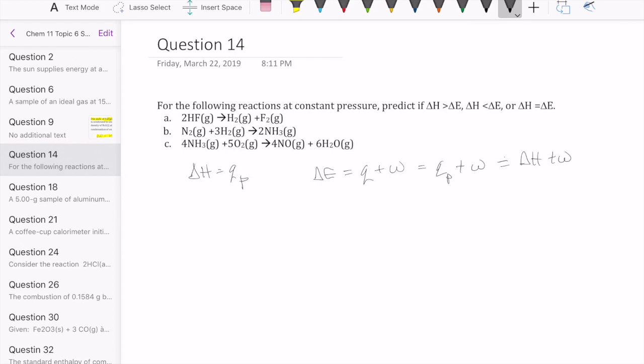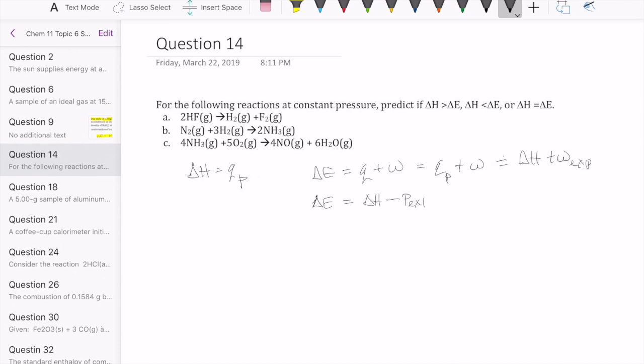Now remember that the work we have in chemistry is expansion work, which looks like minus P external times delta V. So we can then rearrange the equation so that delta H is delta E plus P external times delta V.